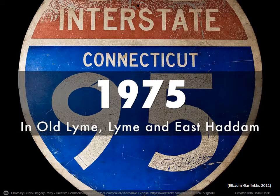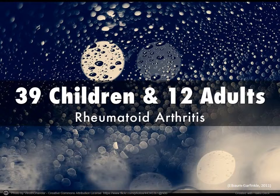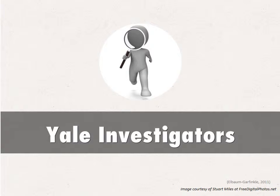In 1975, across three cities in Connecticut — Old Lyme, Lyme, and East Haddam — there was a strange outbreak of rheumatoid arthritis. No one could explain this cluster of illness, which spread across 39 children and 12 adults.